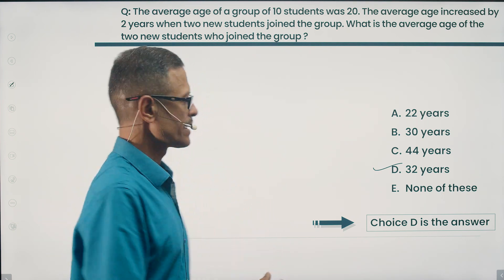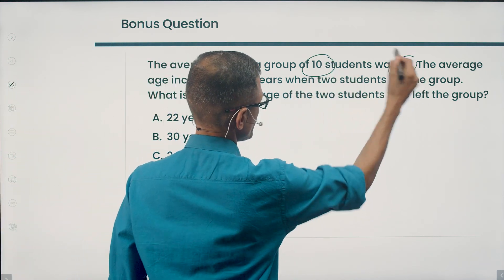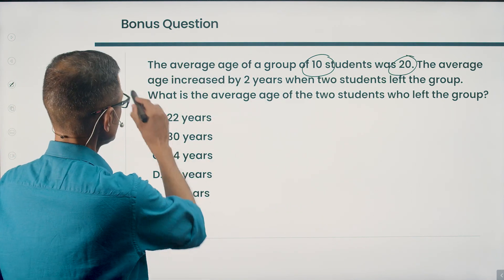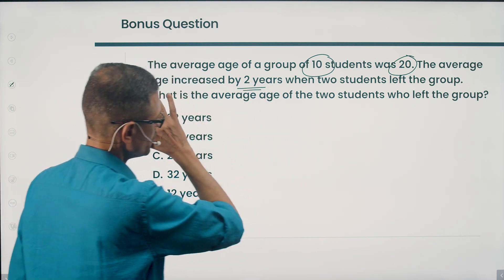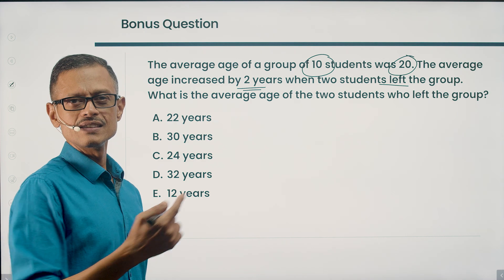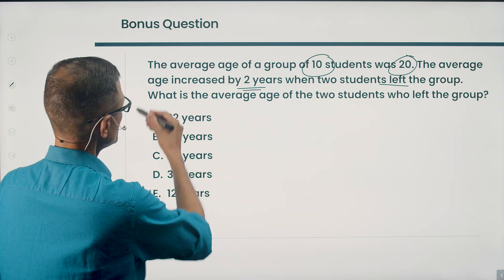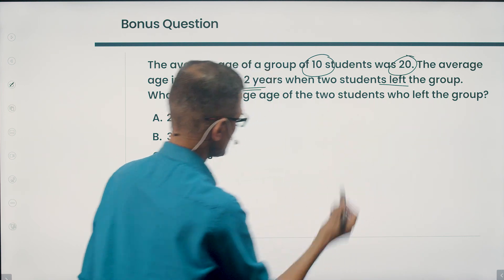As I promised, here's a bonus question. Slight change to the wordings. The average age of group of 10 students was 20. No change there. The average age increased by 2 years. No change there. When 2 students left the group, the original question had 2 students joining the group. Here 2 students left the group. What is the average age of the 2 students who left the group?